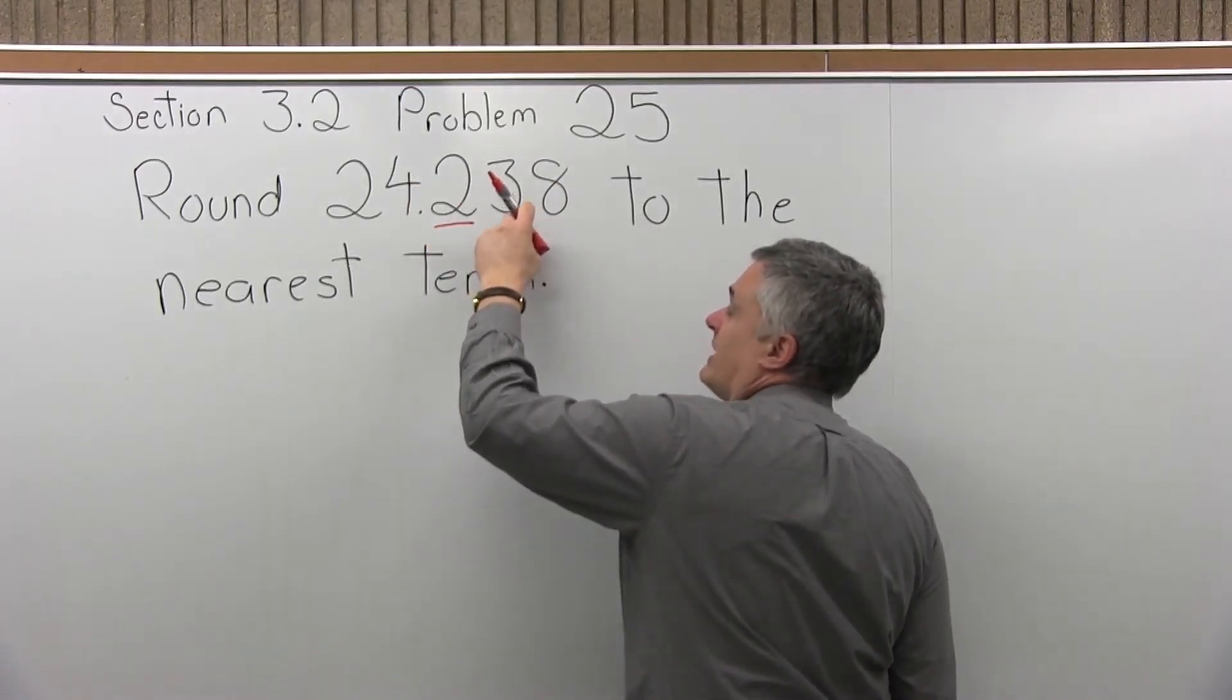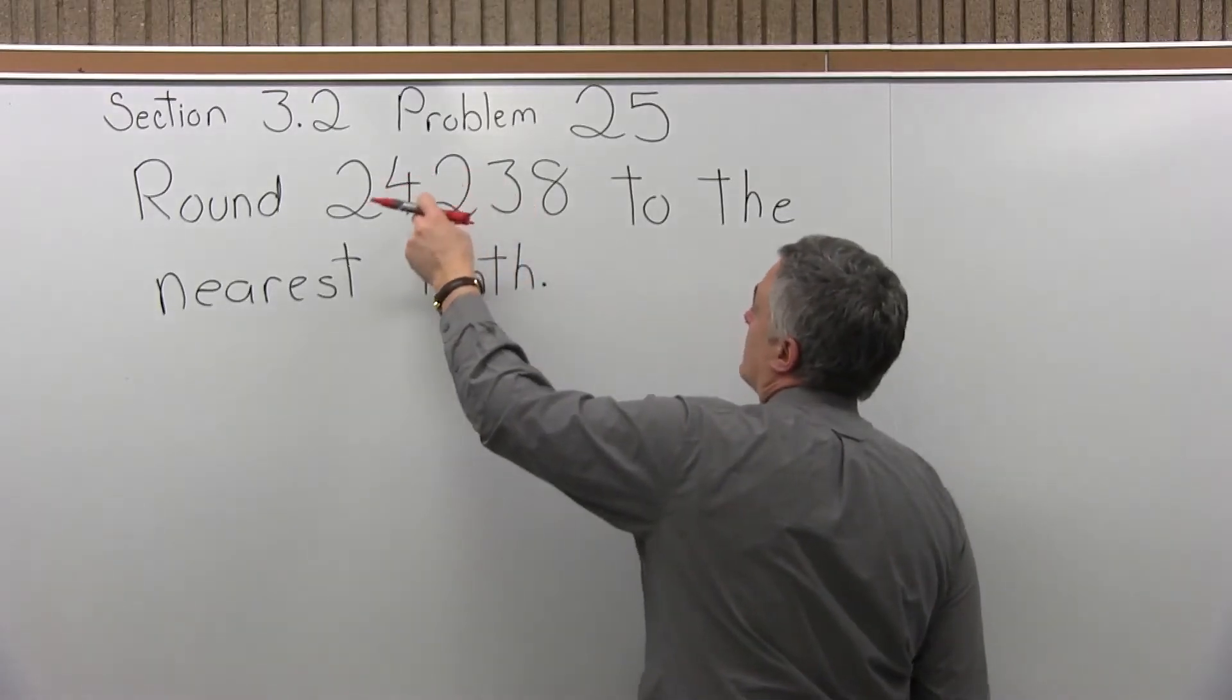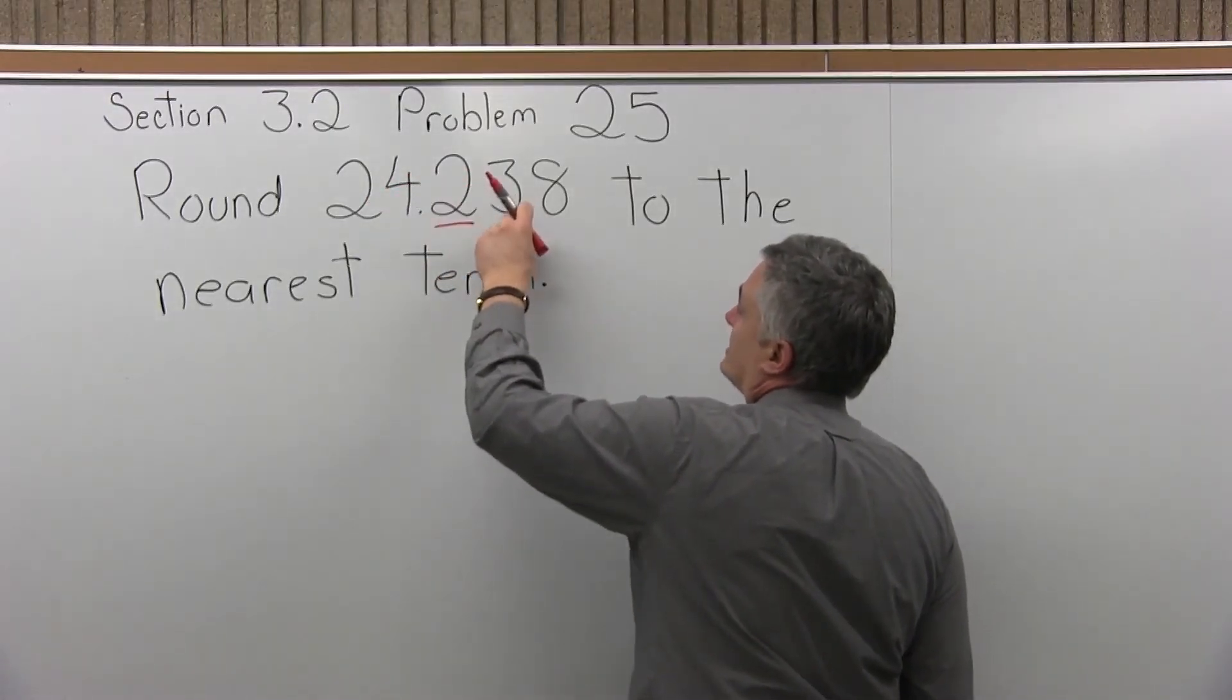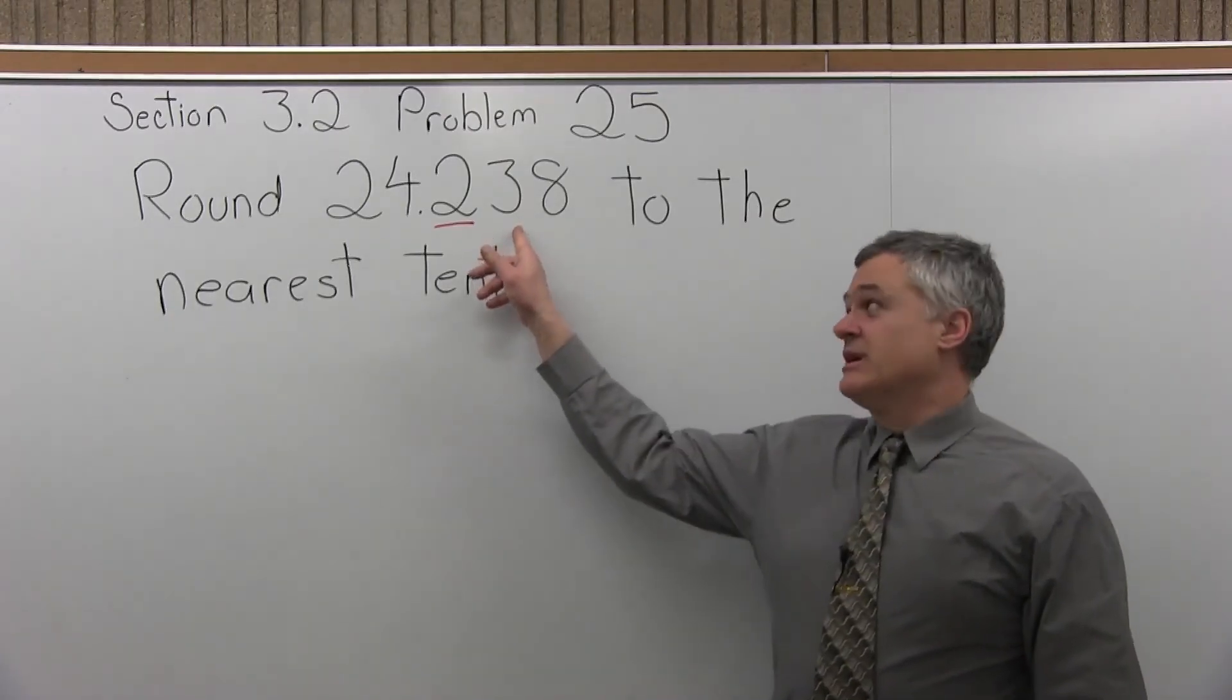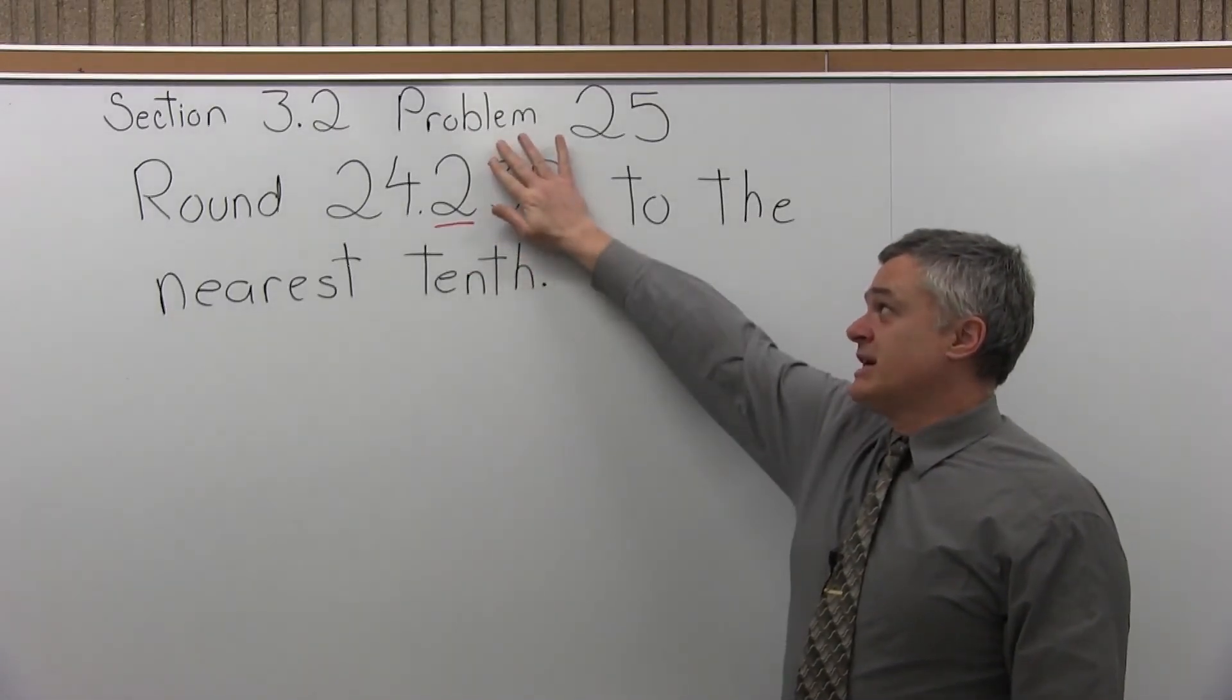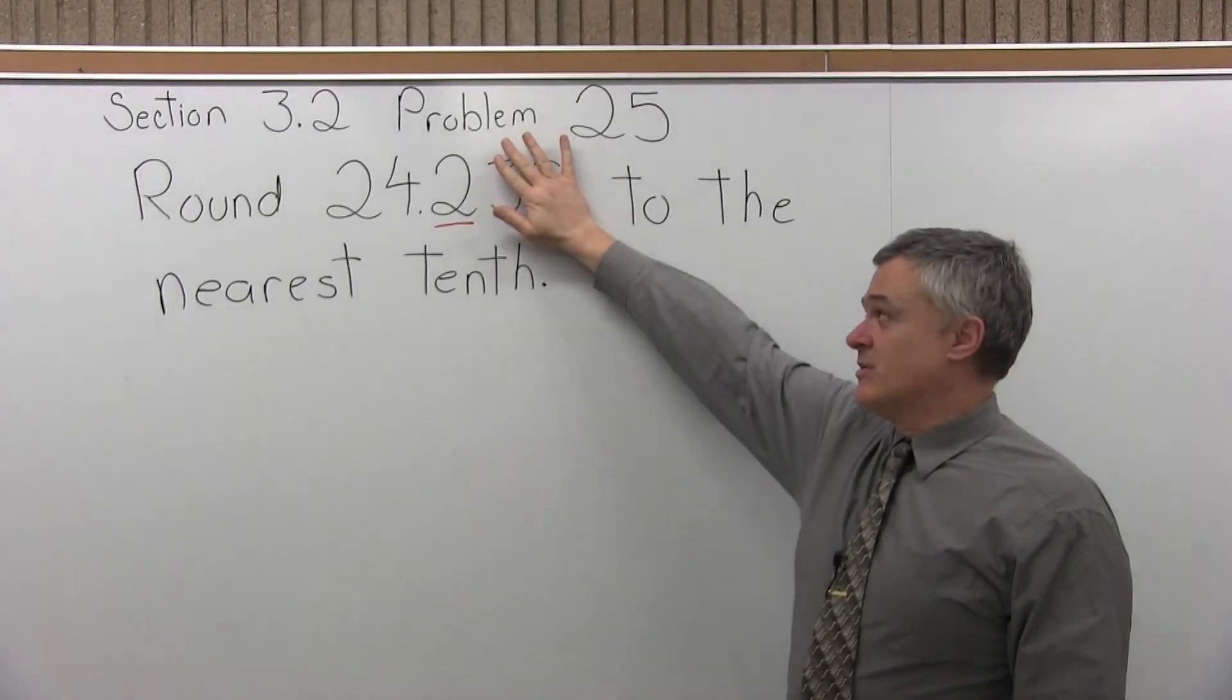Now the next digit over to the right, if we look, is not big enough to make it a 24.3. If the digit to the right is 0, 1, 2, 3, or 4, which is the case here, 3, we would just chop off the digits after the rounding position, which is what we're going to do.